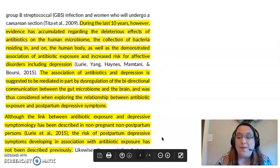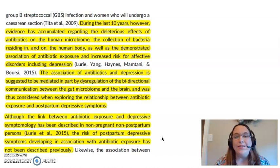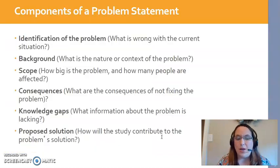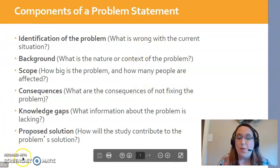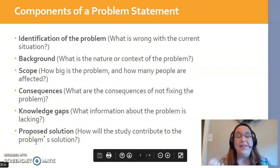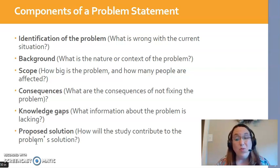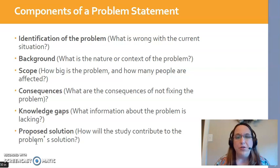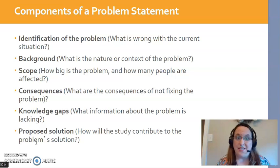They've spent the whole introduction telling you how important this issue is and that nobody has studied it — hence, they're about to study it. That's a compelling argument for why research is needed. You need to be able to articulate why something is so important. When you construct a problem statement, try to include as many of these components as possible, because that packs a bigger punch and lets the reader know this is a big problem that really needs to be solved. That's your problem statement in a nutshell — passionately talk about why a problem needs to be solved.